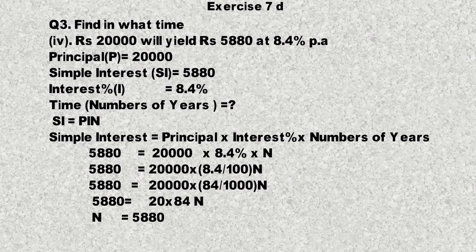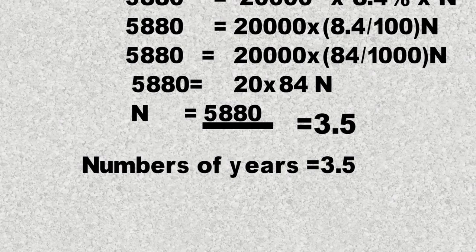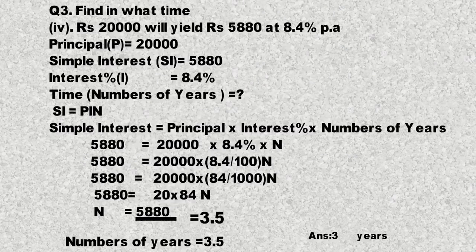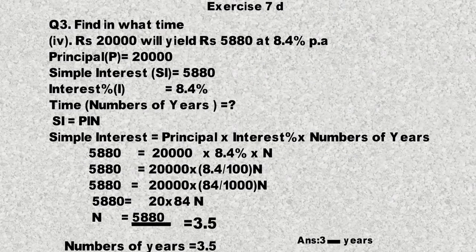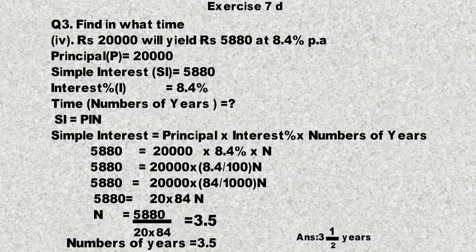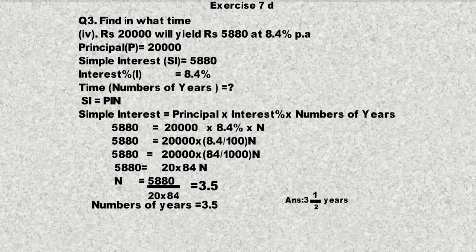n = 5880 ÷ (20 × 84)۔ جب اوپر والی رقم پر تقسیم کریں گے تو ساڑھے تین سال آجائے گا۔ ساڑھے تین سال کو 3.5 لکھیں یا 3 and a half لکھیں — دونوں ایک ہی چیز ہیں، جواب میں کوئی فرق نہیں۔